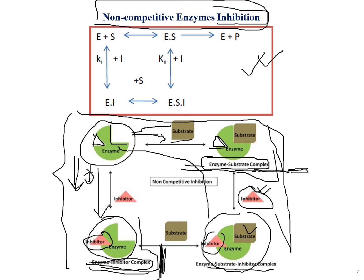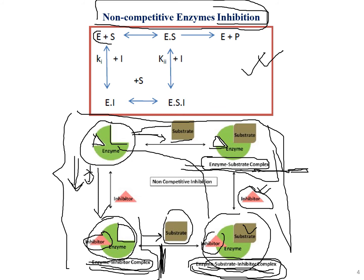Since the inhibitor is already attached, no second inhibitor is needed. The enzyme still has an active site empty, which is then occupied by the substrate. So the substrate enters the active site along with the inhibitor, forming the ESI complex — the trio. In both paths, the final result is the enzyme-substrate-inhibitor complex.